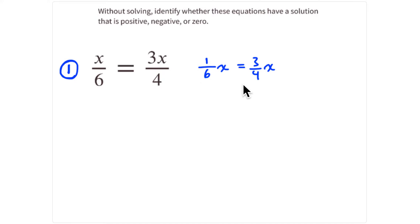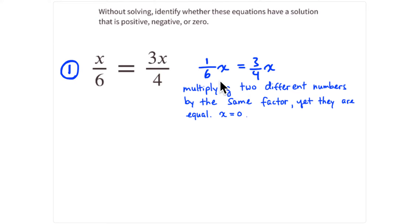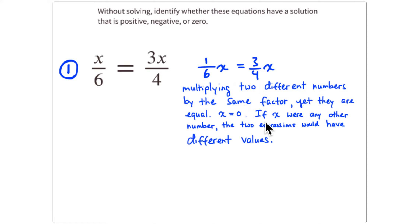The only case where multiplying x by two different numbers gives equal results is when x is zero. If x is zero, one-sixth of zero is zero and three-fourths of zero is zero. Any number of zero things is still zero things. If x were any other number, the two expressions would have different values, so x must equal zero.